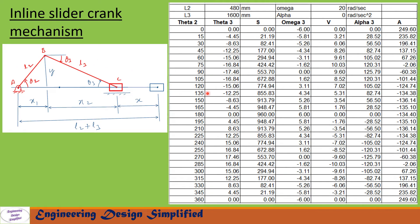Now let us solve a problem. Given: crank length L2 = 480 mm, coupler length L3 = 1600 mm, omega2 = 20 rad/s (counterclockwise, taken as positive), and alpha2 = 0 rad/s². Theta2 is varied from 0° to 360° in intervals of 15°. Theta3 is calculated using the derived equation. Slider displacement is also tabulated — at theta2 = 0°, displacement is 0 (slider at rightmost position).